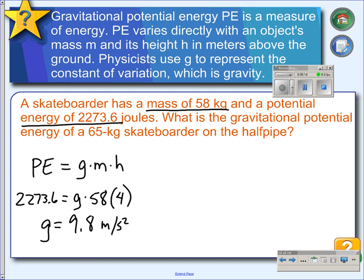Now we can answer this question. What is the gravitational potential energy of a 65-kilogram skateboarder on a half-pipe? The half-pipe is still 4 meters high, so the potential energy is going to be 9.8, for gravitational constant, times the 65-kilogram rider, times 4 meters high, and that gives us 2,548 joules.